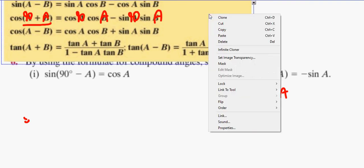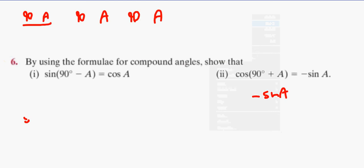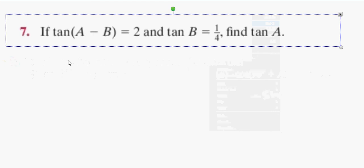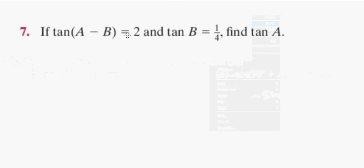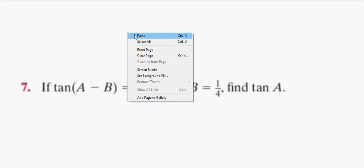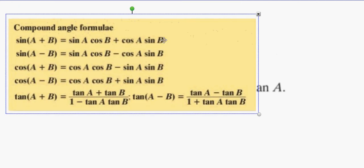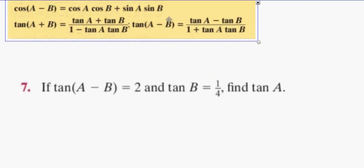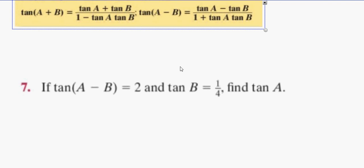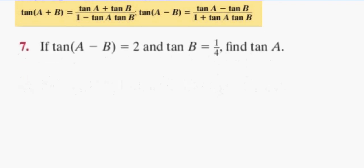All right, these aren't taking much time, thank God. Let's keep going - problem 7. What formula do you think I'm going to use? Tan A minus B. We're going to replace that with 2 equals tan A minus a quarter, all over...